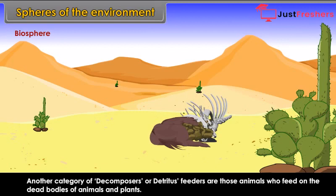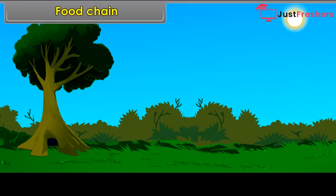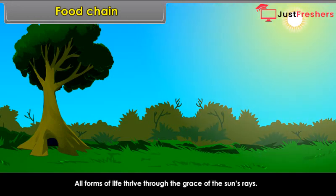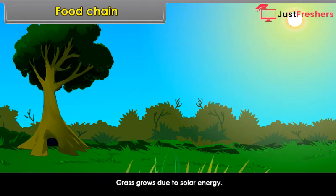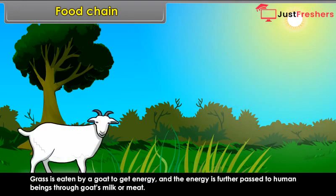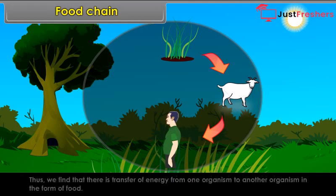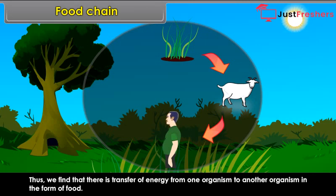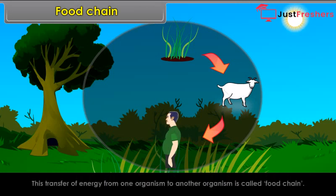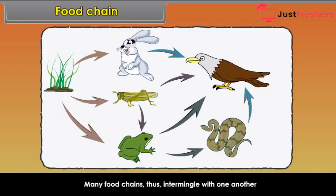Food chain: All forms of life thrive through the grace of the sun's rays. Grass grows due to solar energy. Grass is eaten by a goat to get energy, and that energy is further passed to human beings through goat's milk or meat. There is transfer of energy from one organism to another in the form of food. This transfer of energy from one organism to another is called a food chain. Many food chains intermingle with one another, showing complex relationships of organisms at different levels, forming a food web.